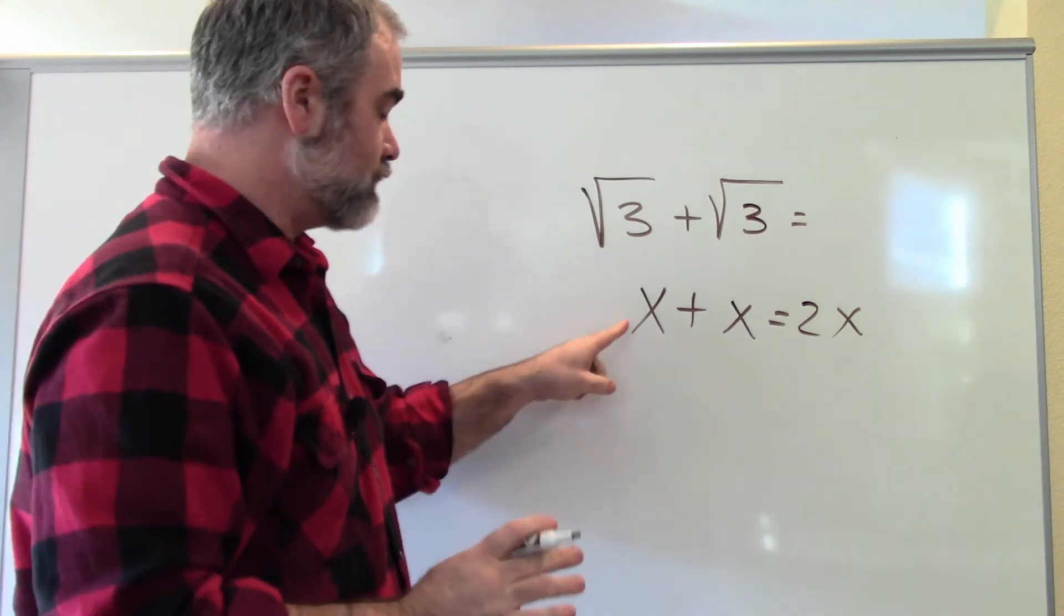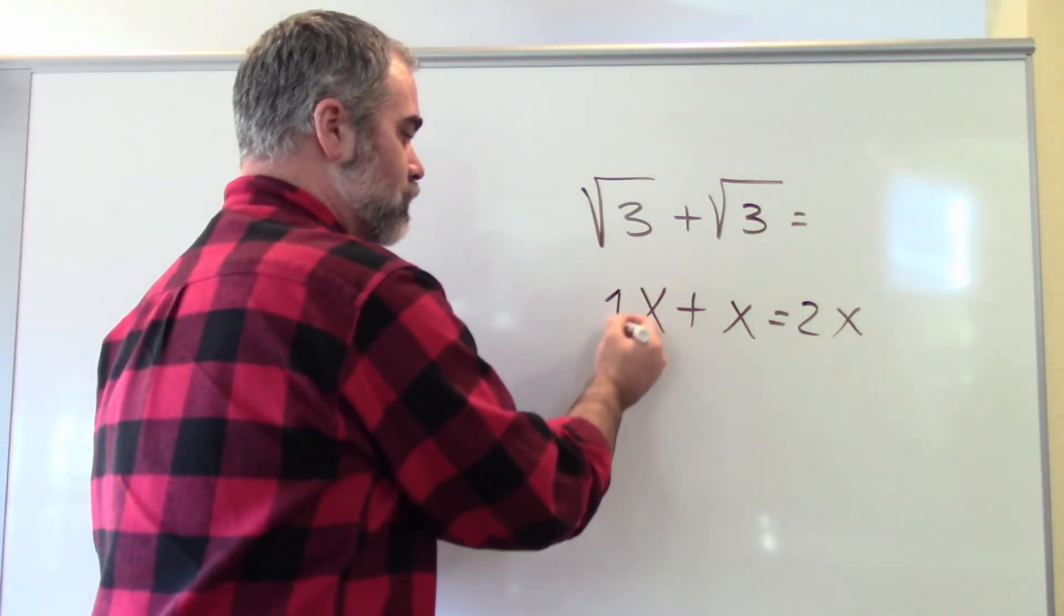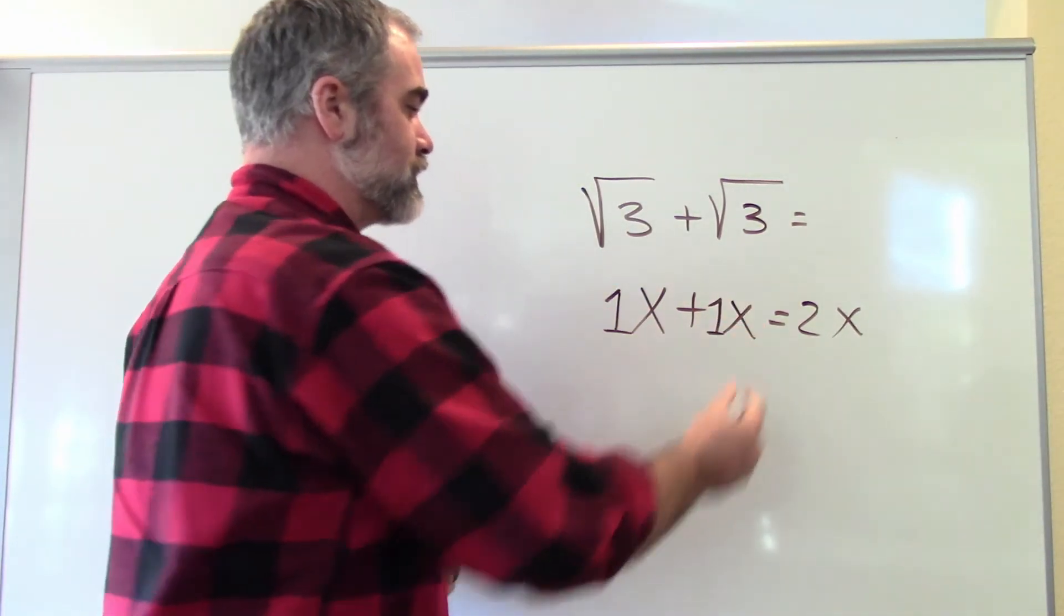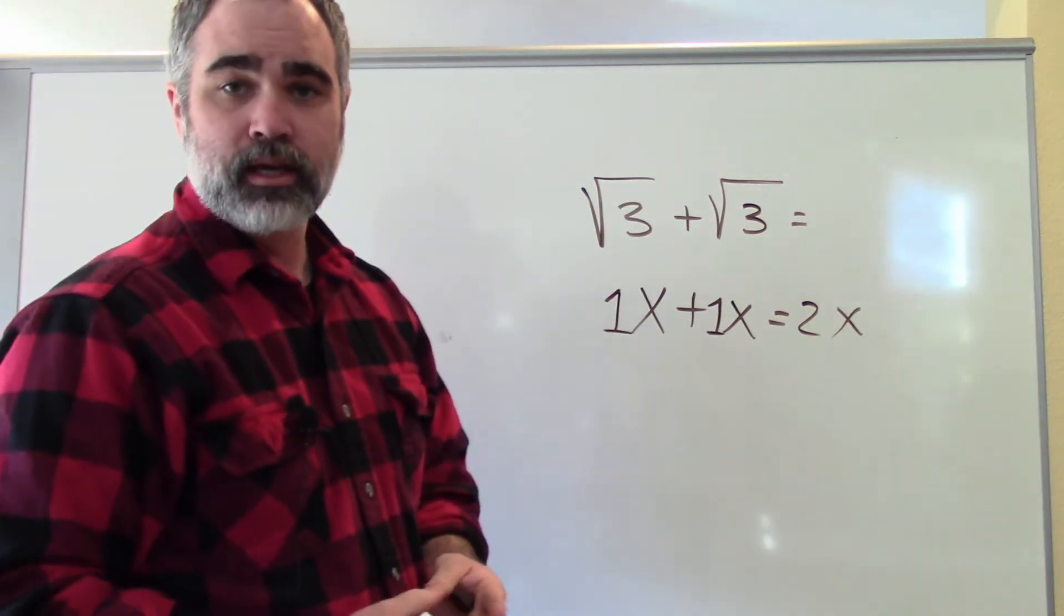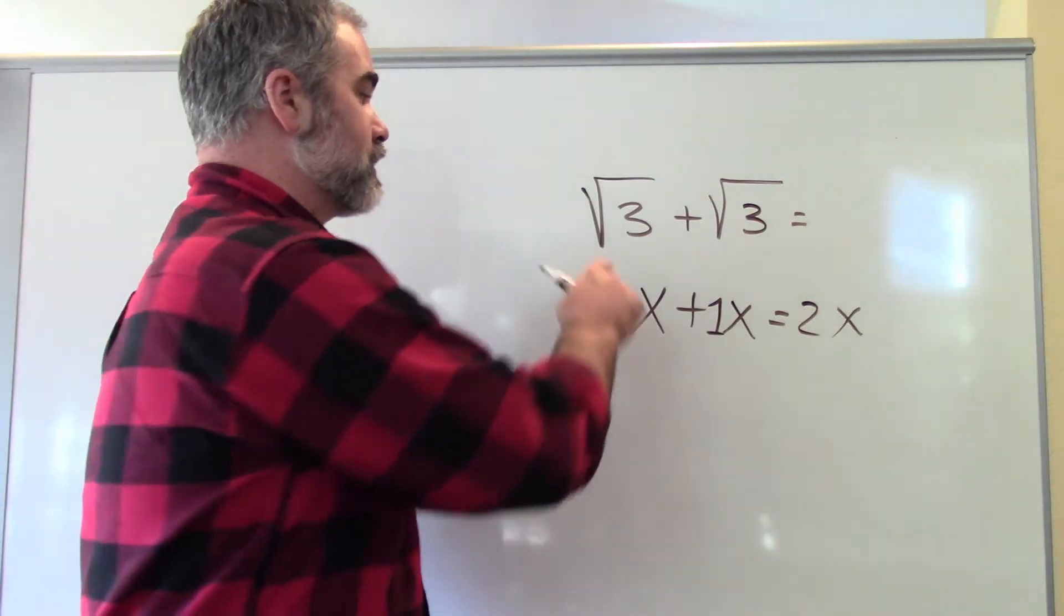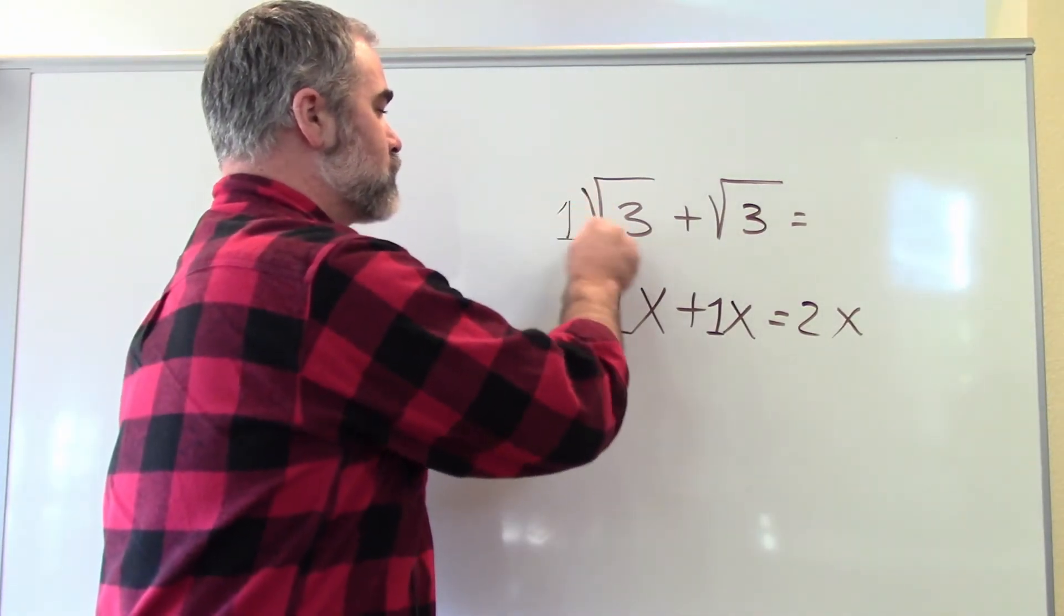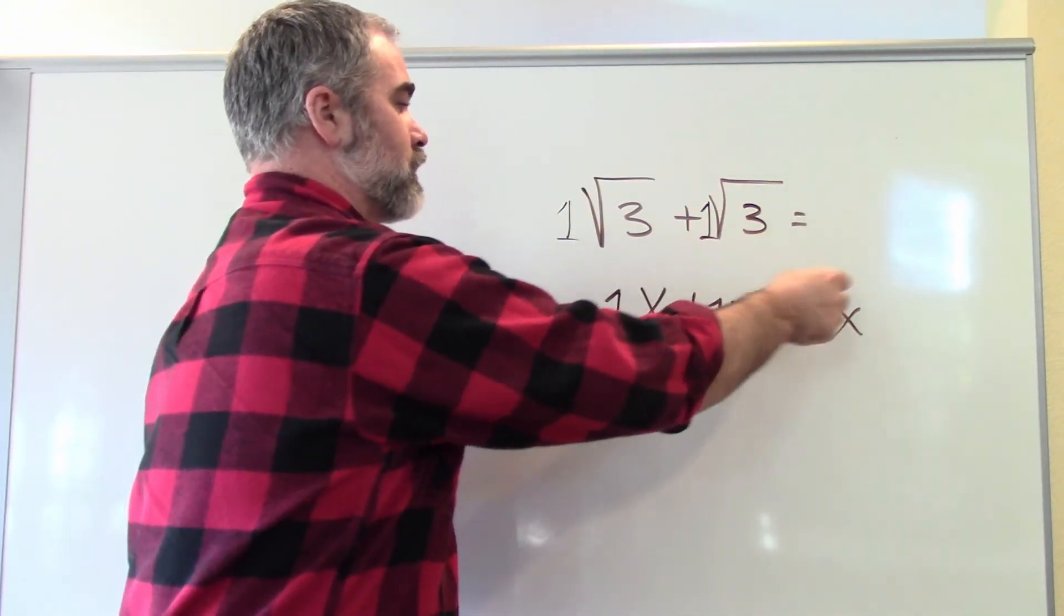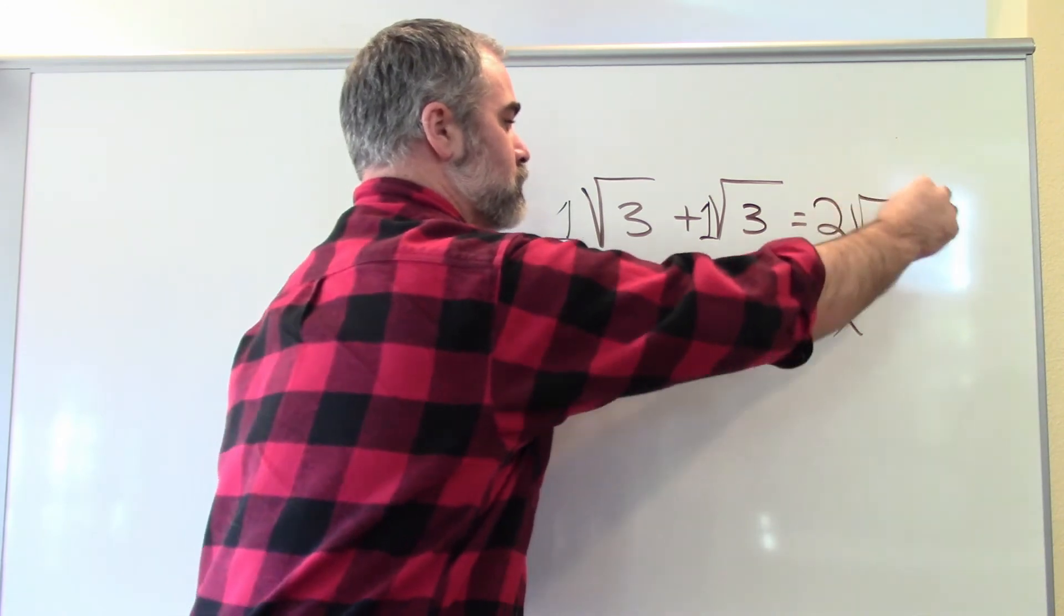In the same way that I've got a ninja 1 here, it's a secret 1 that's hiding. Remember, ninja 1s are always invisible, stealthy, you can't see them. There's 1s in front of every variable that doesn't have another number there. There's 1s here as well. This is 1 square root of 3 and another 1 square root of 3, which makes 2 square root of 3.